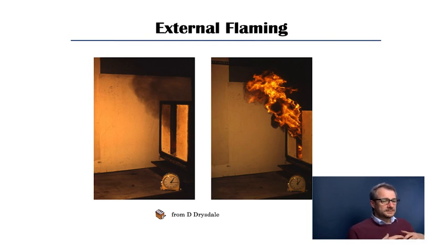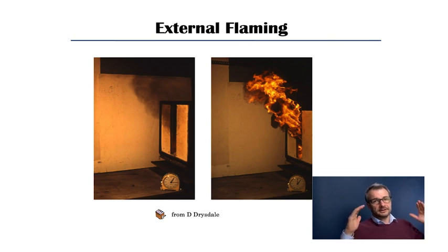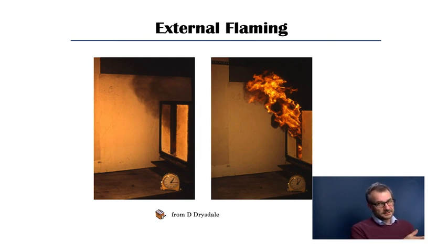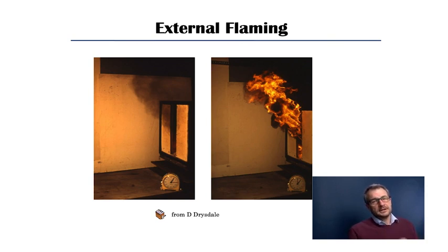Regarding post-flashover, as the compartment runs out of oxygen arriving through vents, the flames themselves go through the vents to find more air — this is called external flaming, where flames come out of windows or doors of a compartment that has flashed over. They can extend a significant distance, both horizontally and vertically. This is an additional hazard because compartmentation between rooms or buildings can be breached: external flaming could ignite a building across the way if the distance is insufficient, or ignite the storey above if flames impinge on a window or flammable facade.